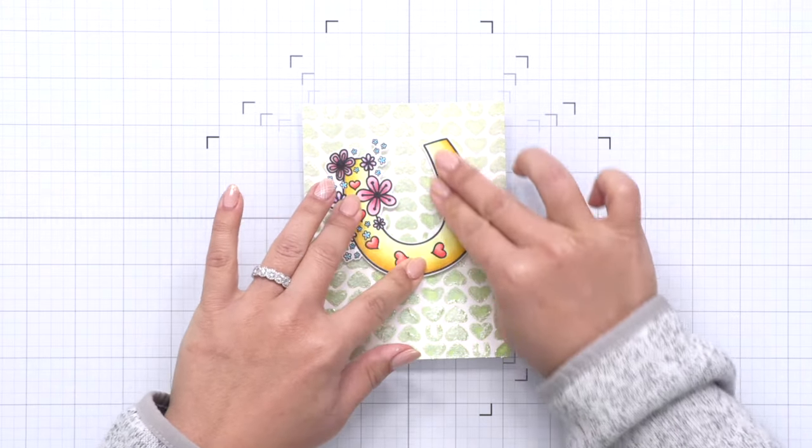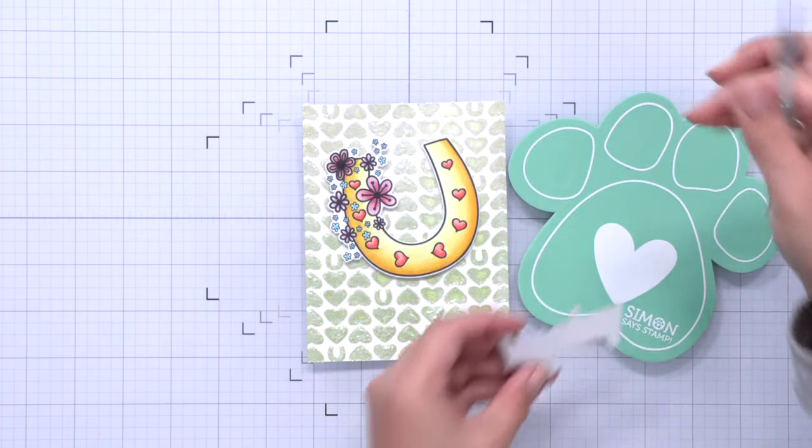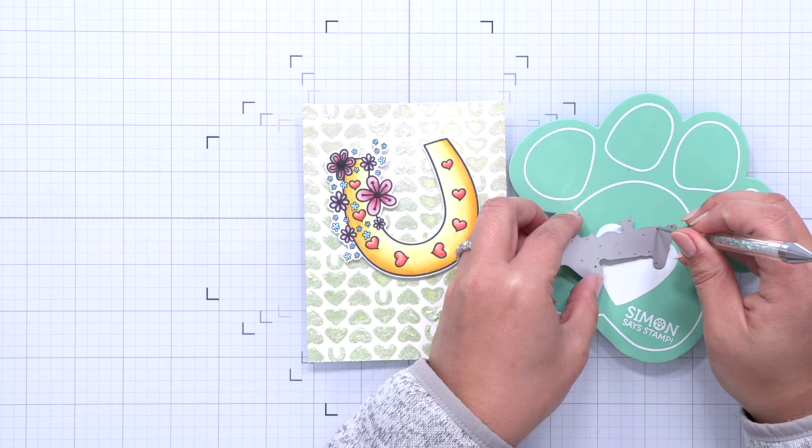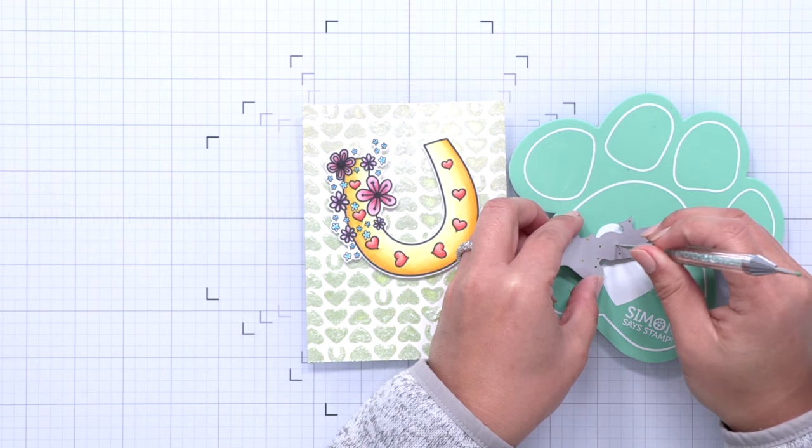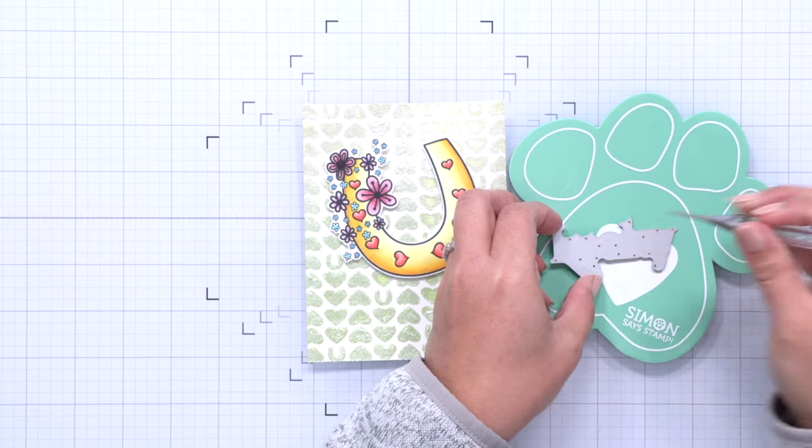I added some 3D foam squares on the back of the horseshoe and then I attached it to my panel. For the sentiment I'm using the fancy lucky die and I'm going to die cut it with matte gold cardstock and some white cardstock to layer for some dimension.